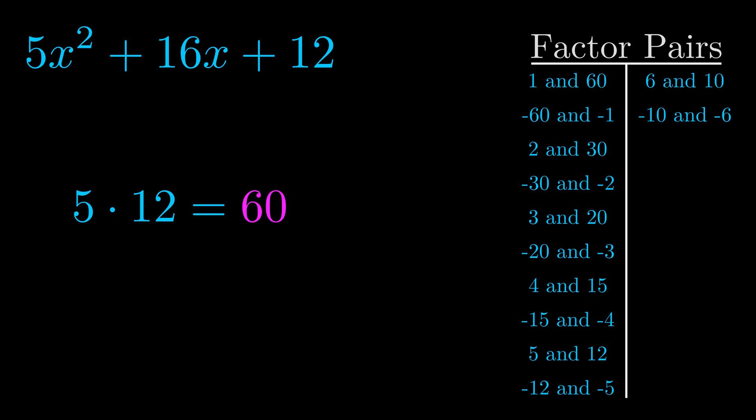The b value is the coefficient on the x term. That's the middle term, the one that we haven't done anything with yet. And really this is the only factor pair that we need.